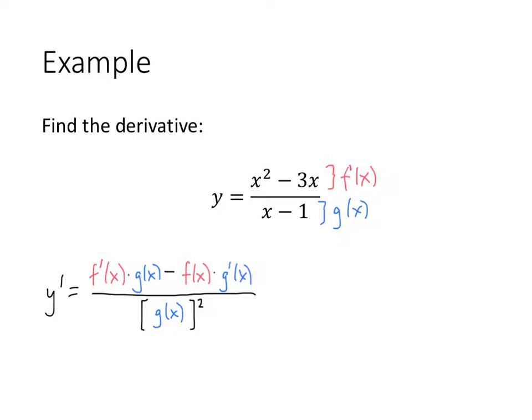So on the top, we have the derivative of f, which in this case is going to be 2x minus 3, times g, which is just x minus 1, minus the top function, which is x squared minus 3x, times the derivative of the bottom function. The derivative of x minus 1 is 1. Remember the derivative of x is 1, and the derivative of 1 is 0. And then we divide all that stuff by the bottom function g of x, x minus 1 squared.